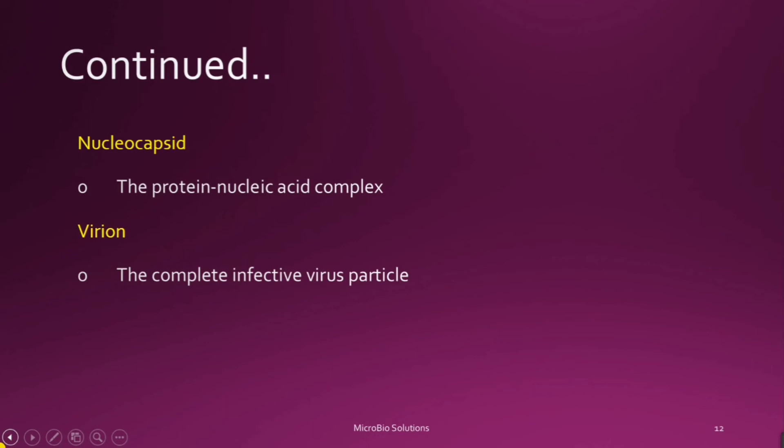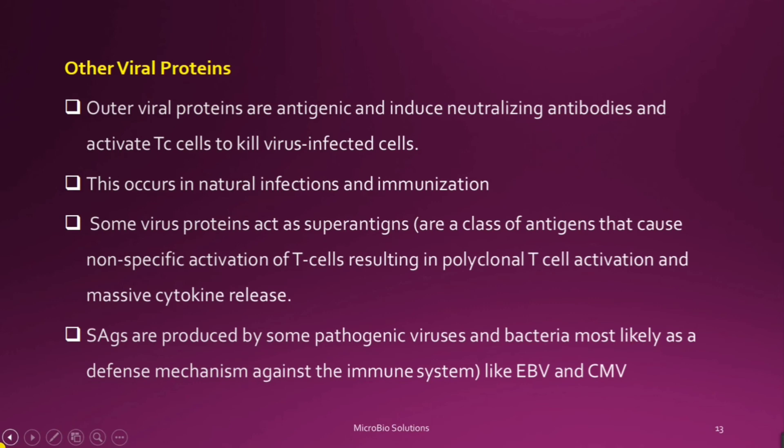Other viral proteins seen in the virus include outer viral proteins. They are antigenic and can induce neutralizing antibodies, and thereby activate cytotoxic T cells to kill virus-infected cells. This occurs in natural infection and immunization — this is the basis of immunization.